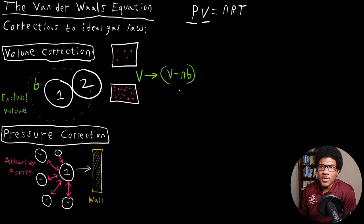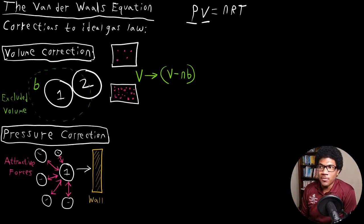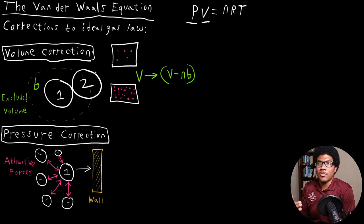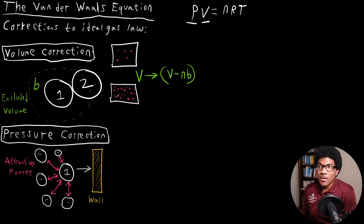B is this excluded volume, and we multiply by the number of moles because we have to account for how many gas particles are actually in the container. A particle can no longer move in the region taken up by other gas particles, so we account for this in the Van der Waals equation by subtracting the Van der Waals parameter B. That parameter B is going to be larger depending on how large your gas molecule is. For example, the Van der Waals parameter B for benzene would be much larger than B for methane. So that's the volume correction.